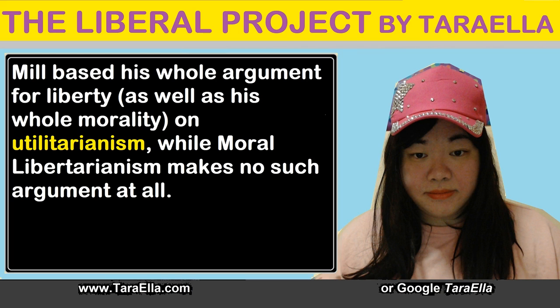Mill clearly had a different justification for his liberalism compared with a moral libertarian justification. Mill based his whole argument for liberty, as well as his whole morality, on utilitarianism, while moral libertarianism makes no such argument at all. Indeed, given the moral libertarian philosophical commitment to an objective morality based on the objective truth, it may be incompatible with utilitarian calculations at least some of the time.